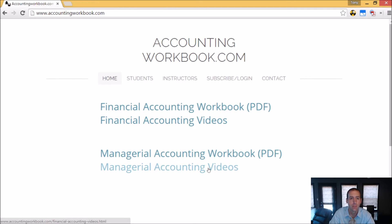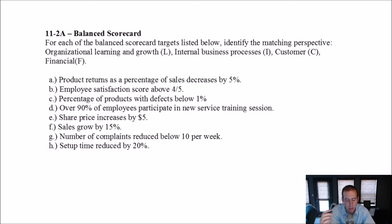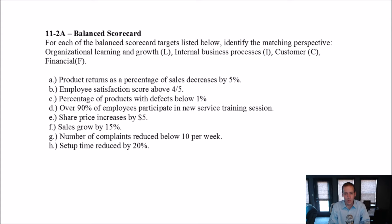Let's get started with the problem. Let's examine 11a. It just has us trying to figure out, we've got these various measures and targets — but where should they be slotted in? Which area? Remembering that our balanced scorecard has four areas: organizational learning and growth, internal business processes, customer, and financial. We're trying to say which area are we measuring here and where does it fit. It's just a good way to practice and understand those balanced scorecard perspectives.